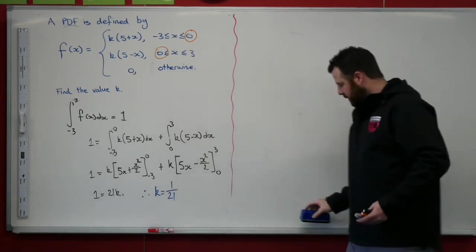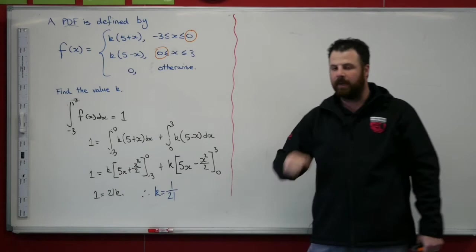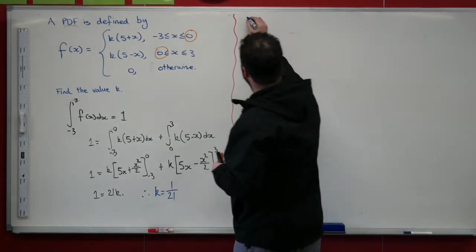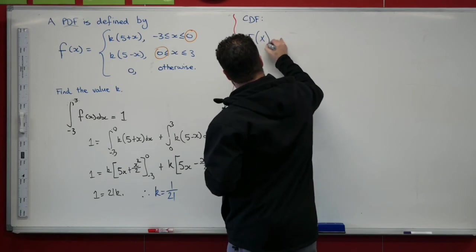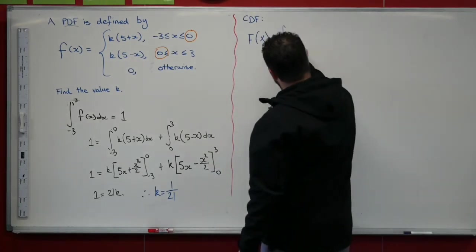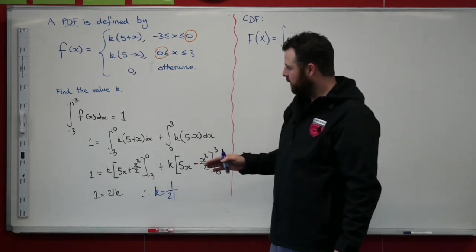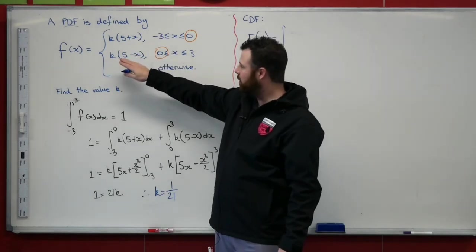Let's take that on. And let's now go through, now that we know the value of k, and calculate the CDF for this function. So the CDF, that is going to be F(x) equals the integral of this and this.